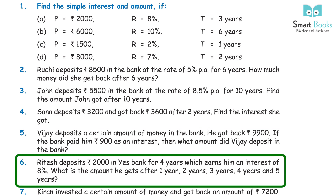Question 6: Ritesh deposits Rs 2,000 in Yes Bank for 4 years, which earns him interest at 8%. What is the amount he gets after 1 year, 2 years, 3 years, 4 years, and 5 years? Answer: 1st year Rs 2,160, 2nd year Rs 2,320, 3rd year Rs 2,480, 4th year Rs 2,640, 5th year Rs 2,900.